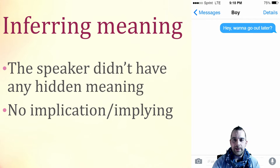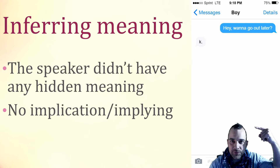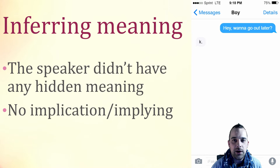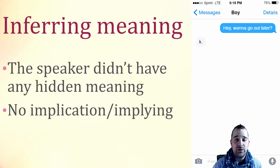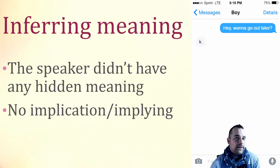Now imagine they respond with just 'K.' with a period. What does that mean? What did you do? You start retracing all the terrible things you might have done or said. When they sent that 'K.', did they imply something? Maybe they're just saying 'all right, let's go out later.' What you're doing now is inferring meaning. Maybe they just put the dot there without knowing what it implies — but what's happening is not that they're implying something to you, you're inferring something from what they said. You think they're mad at you because they said 'K' with a dot. That's inferring. That's why inferring is useful.